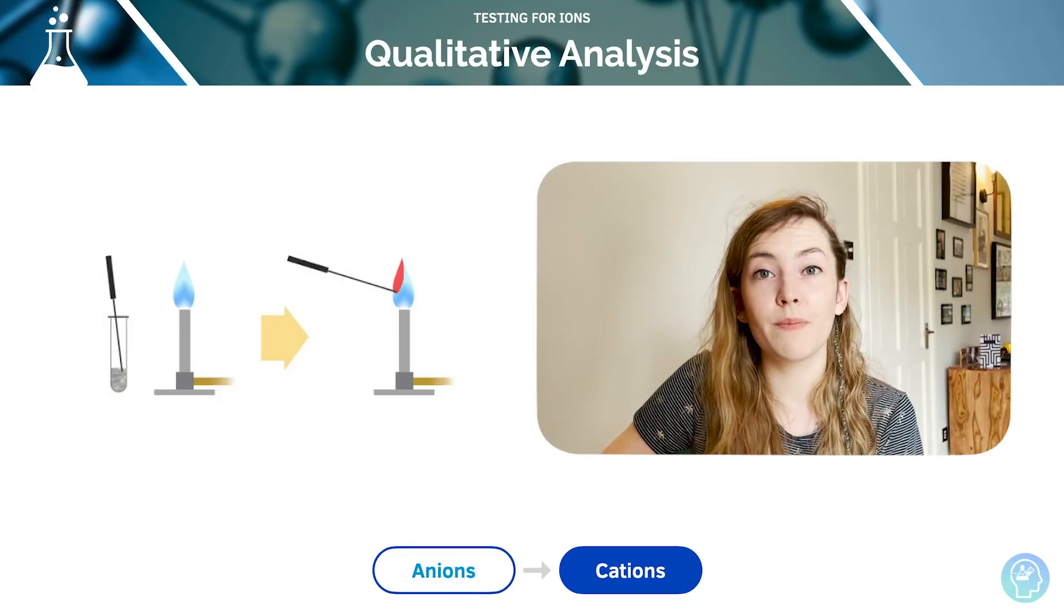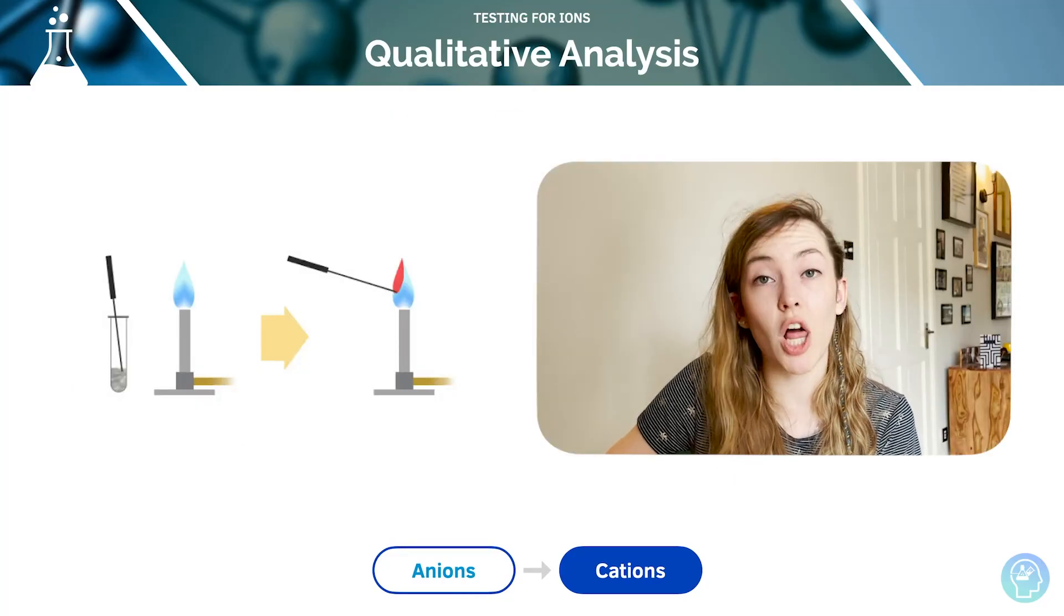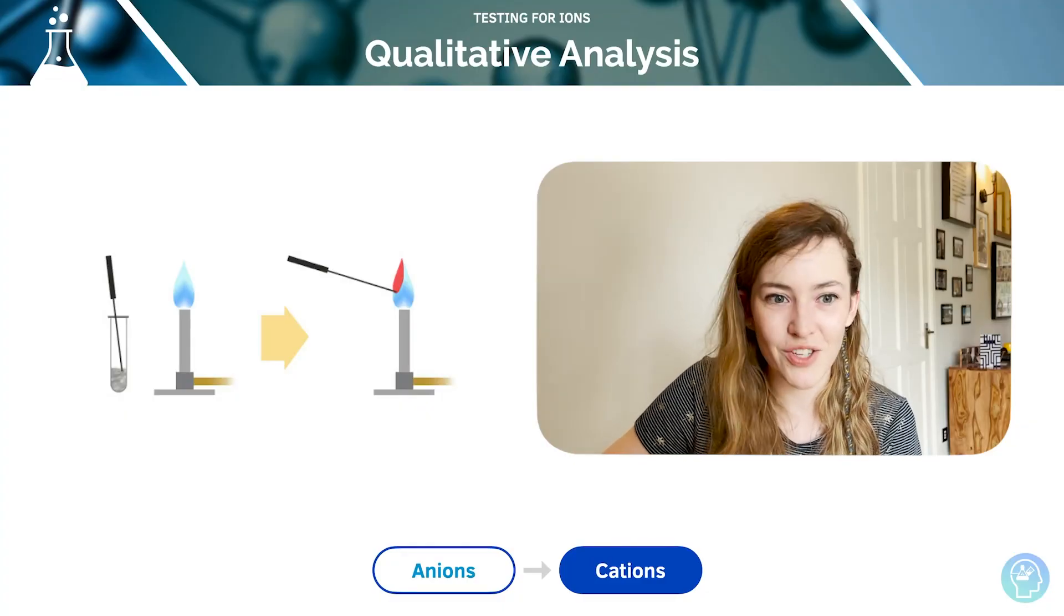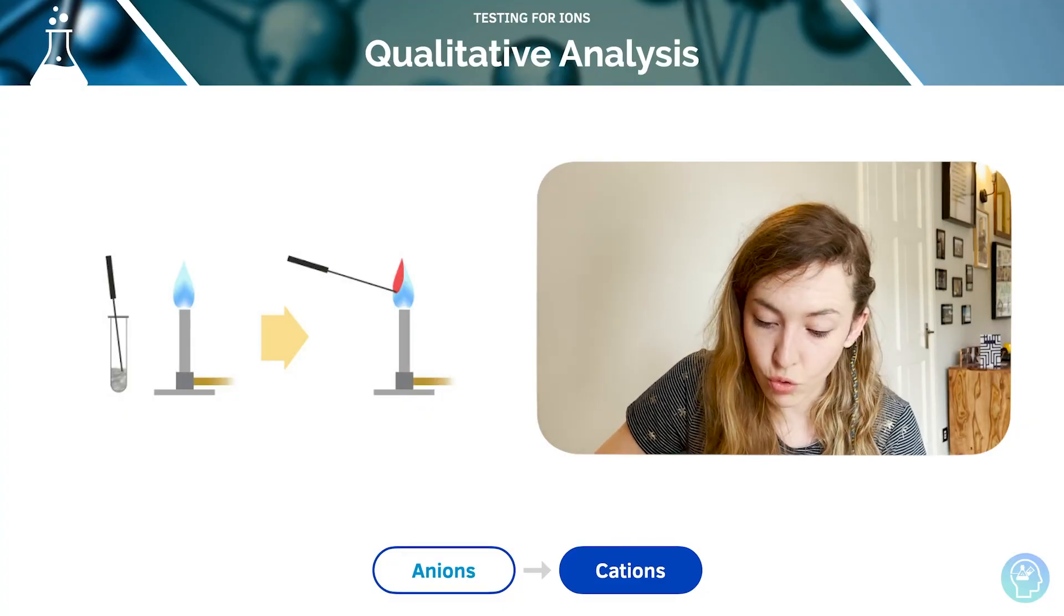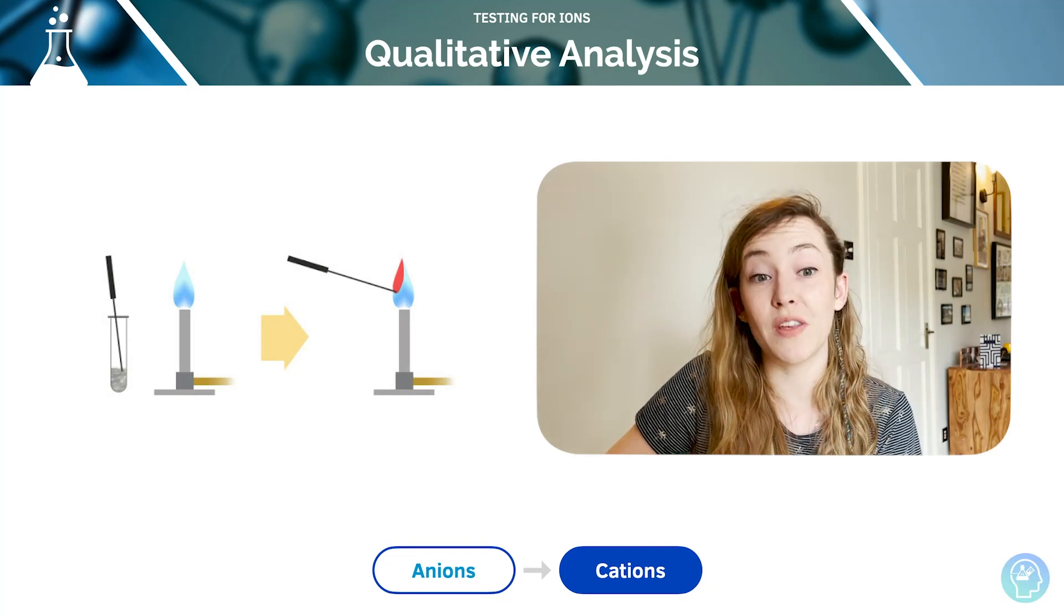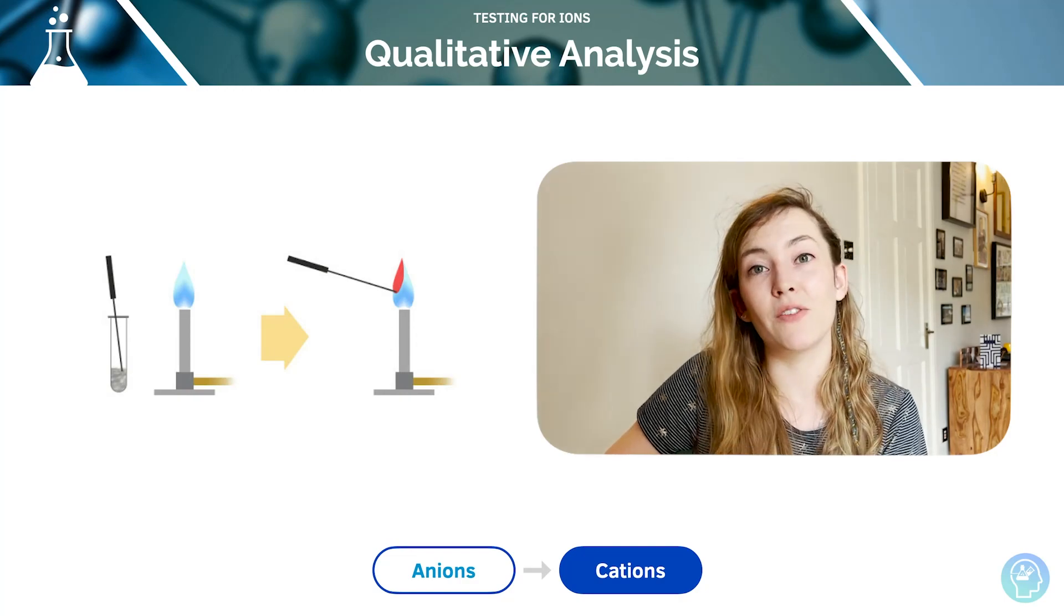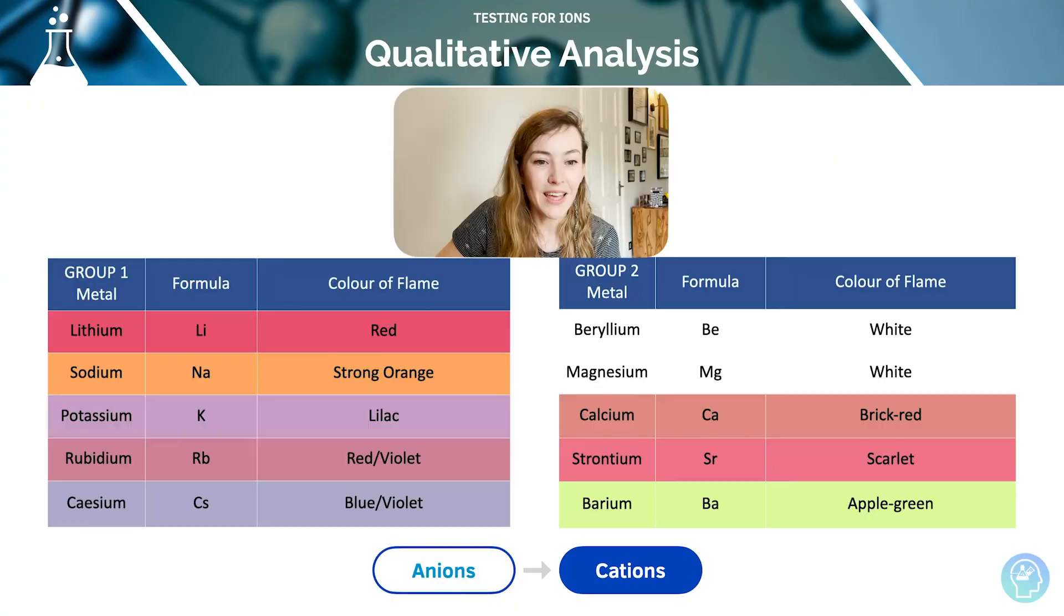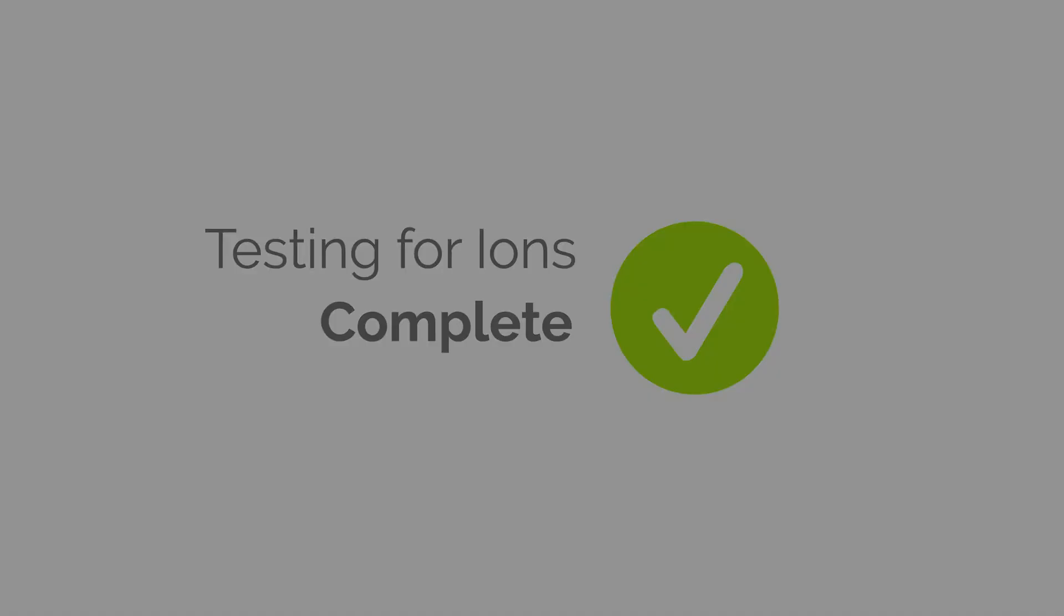Check your specification, because some specifications need you to learn flame tests, others don't. So don't learn things that you don't need to, but some you do. Group 1 and 2 ions can be tested for using flame tests, and different metals give different colored flames. This has been covered in a previous tutorial as well. Here's a summary of those flames and those colors. Go back to that tutorial if you want to have another check. All right. Thank you.